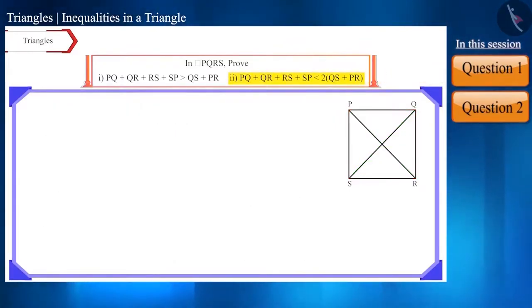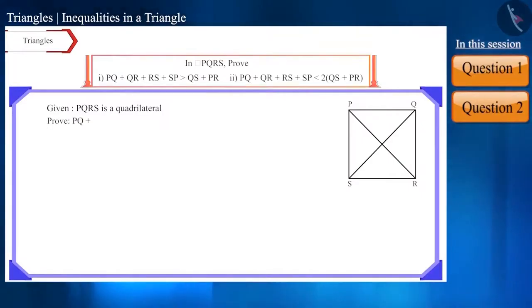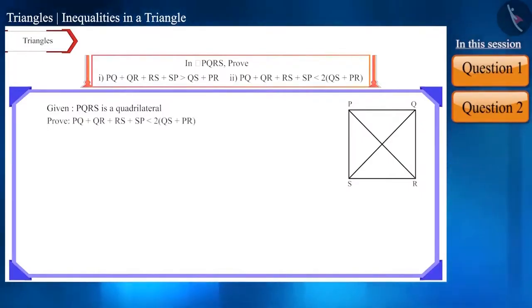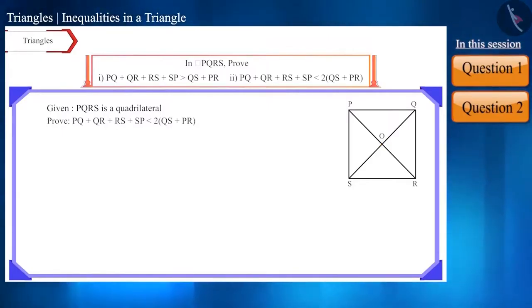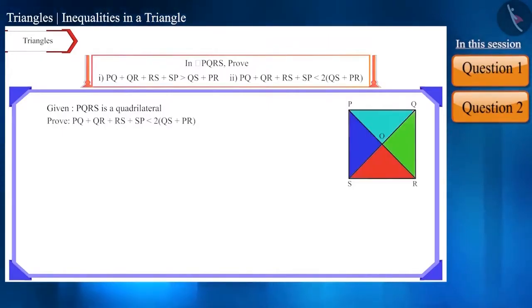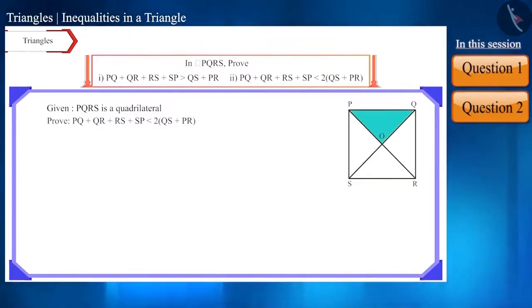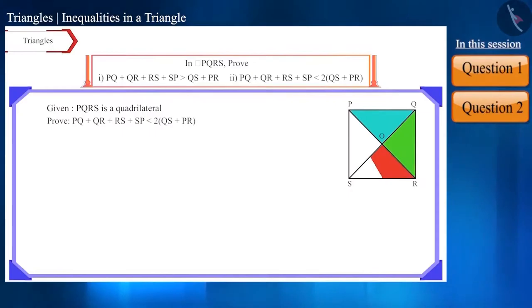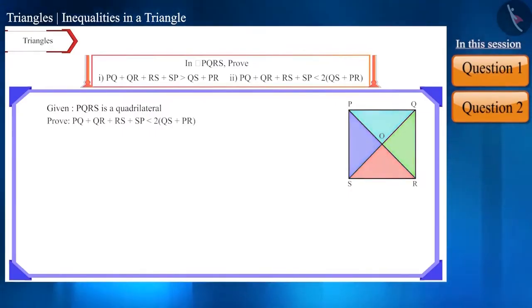Let's move to the second part. We will name the intersection of the diagonals as O. If we pay attention, we now have four small triangles: triangle POQ, triangle QOR, triangle ROS, and triangle SOP.